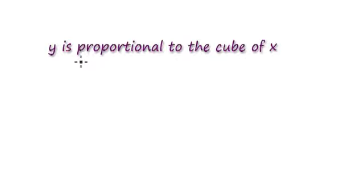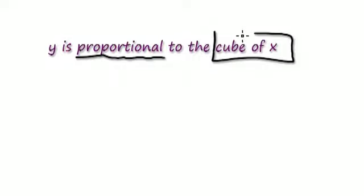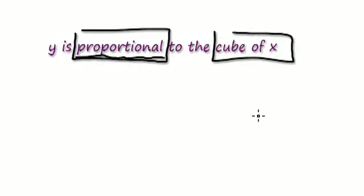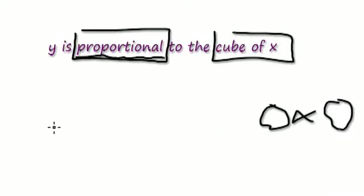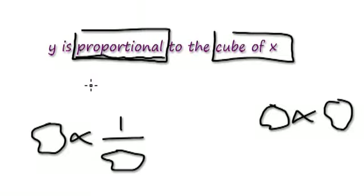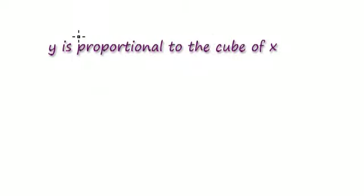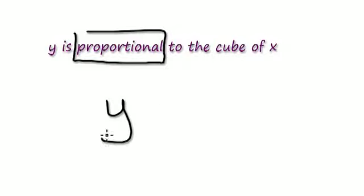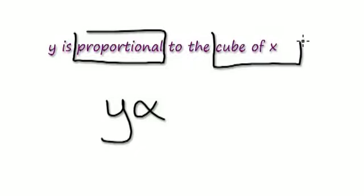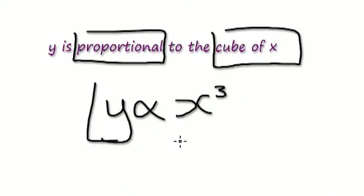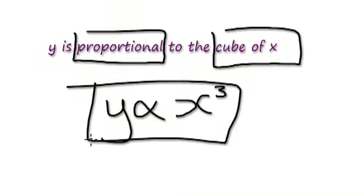And this one here: Y is proportional to whatever — the cube of X. The word proportional tells me it's going to be of the direct form, not the one-over-something form. So Y is proportional to the cube of X, or X to the power of 3. This here would be your answer.